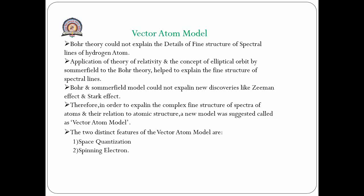In order to overcome all these drawbacks of Bohr-Sommerfield theory, the new model called the Vector Atom Model was invented. In the Vector Atom Model, two distinct features are: first, space quantization, and second, the spinning of an electron, also called electron spin.